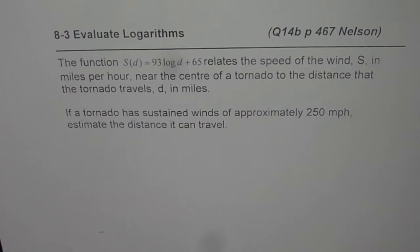The question is, the function S(D) equals 93 log of D plus 65 relates the speed of wind S in miles per hour near the center of a tornado to the distance that the tornado will travel, D in miles.